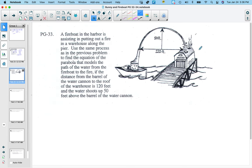So let's take a look at this next example. A fire boat in the harbor is assisting in putting out a fire in a warehouse along the pier. Use the same process as in the previous problem to find the equation of the parabola that models the path of the water from the fire boat to the fire. If the distance from the barrel of the water cannon to the roof of the warehouse is 120 feet, and the water shoots up 50 feet above the barrel of the water cannon. So we have this picture. We can see the water kind of coming across here. Again we have to place the x and y axis. So I'm going to place the x axis here and the y axis here.